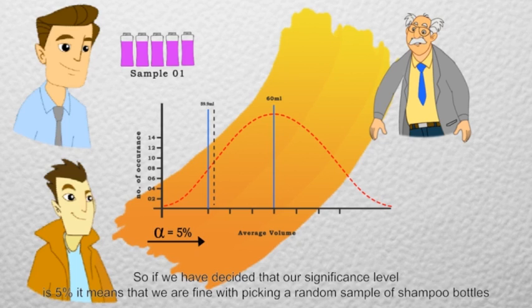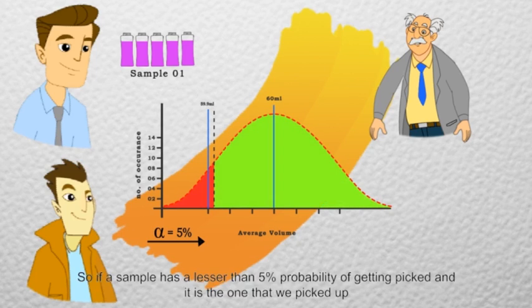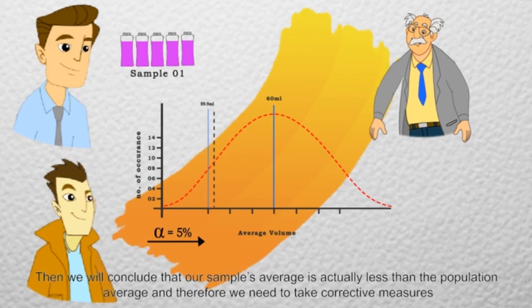So if we decided that our significance level is 5%, it means that we are fine with picking a random sample of shampoo bottles which has a probability of 5 or more than 5% to get picked up. So if a sample has lesser than 5% probability of getting picked up and it is the one that we picked up, then we will conclude that our sample's average is actually less than the population average and therefore we need to take corrective measures.